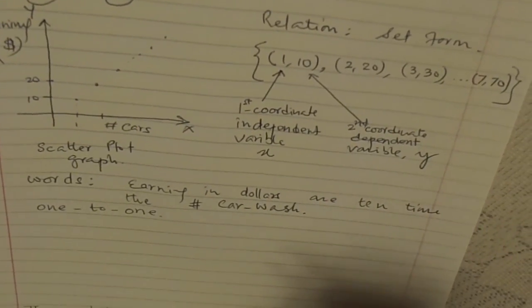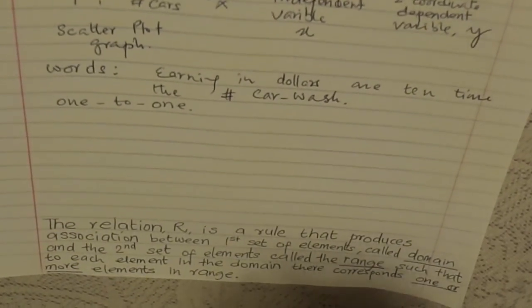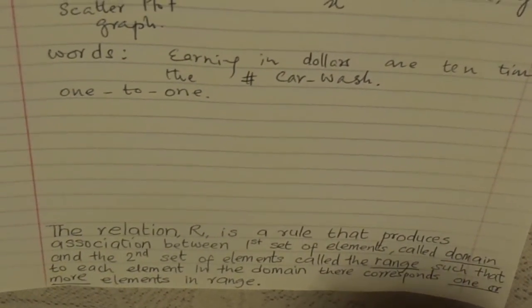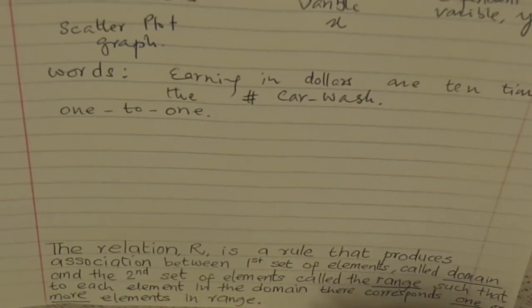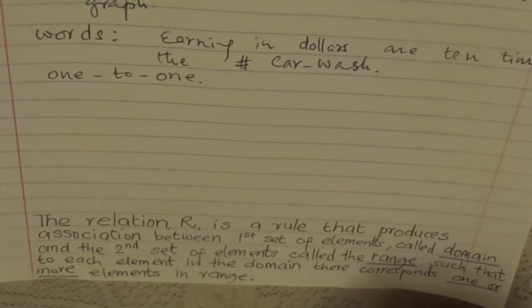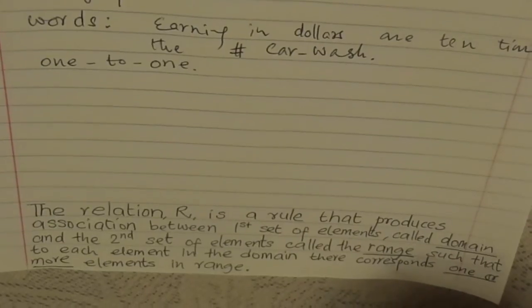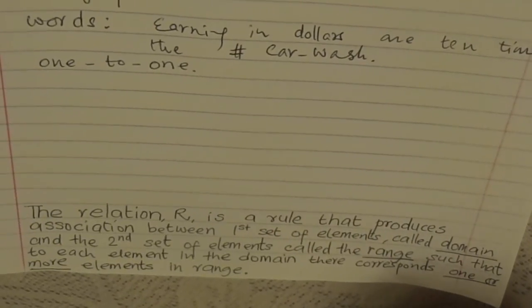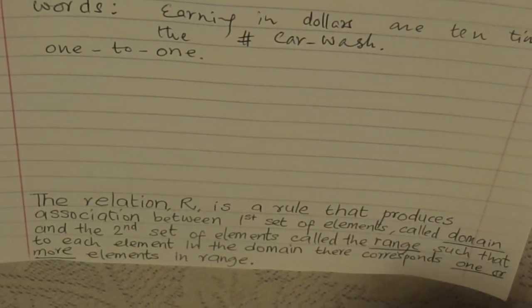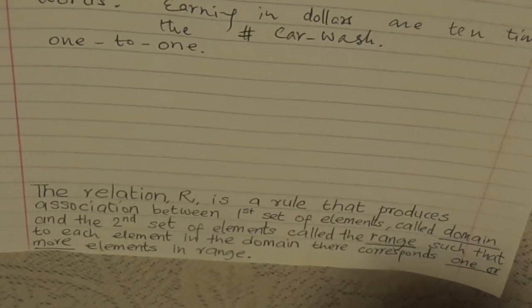To summarize: relations are rules that produce an association between a first set of elements called the domain and a second set of elements called the range, such that to each element in the domain there corresponds one or more elements in the range.